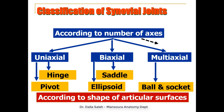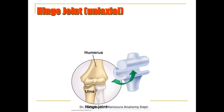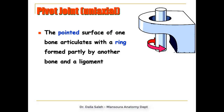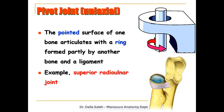We also have non-axial joints, which are plane joints. In hinge joints, which are uniaxial, such as the elbow joint, the lower end of the humerus is convex while the upper ends of the ulna and radius are concave, fitting together in the form of a hinge. In pivot joints, the pointed surface of one bone articulates with a ring formed partially by another bone and completed by a ligament. For example, in the superior radioulnar joint, the pointed upper end of the radius fits into a ring made by the ulna and completed by a ligament, and the radius rotates around its vertical axis within this ring.